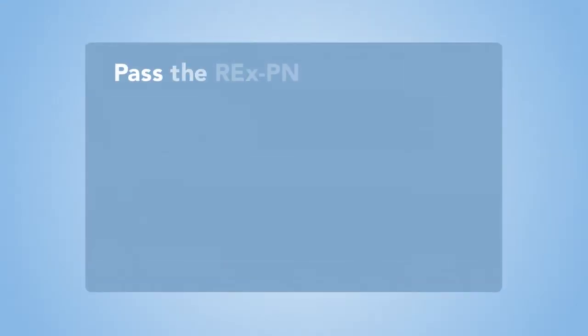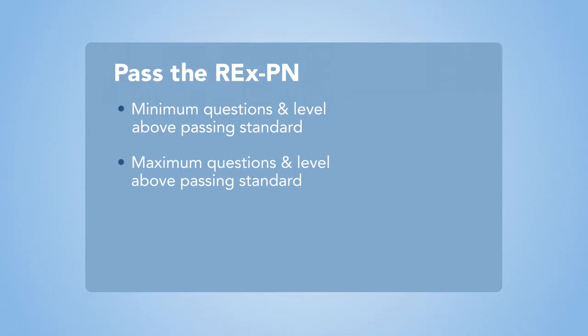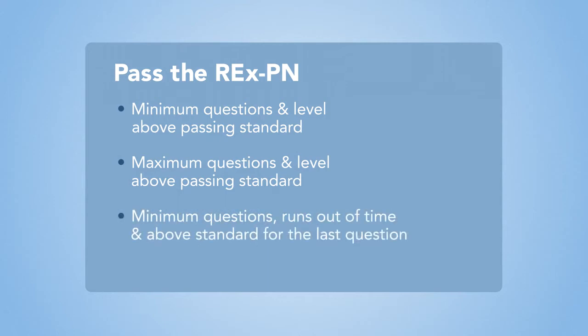A candidate will pass the REXPN if they answer at least the minimum number of questions and achieve a competence level significantly above the passing standard; or answer the maximum number of questions and achieve a competence level above the passing standard, even if not significantly above; or answer at least the minimum number of questions but run out of time and have a competence level above the passing standard for the last question answered.